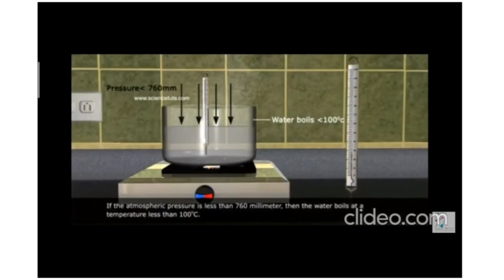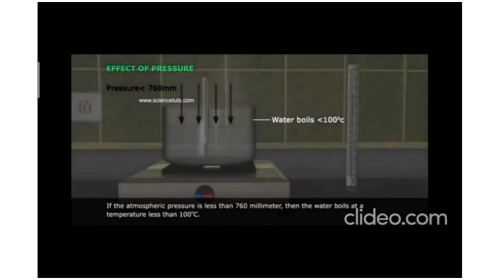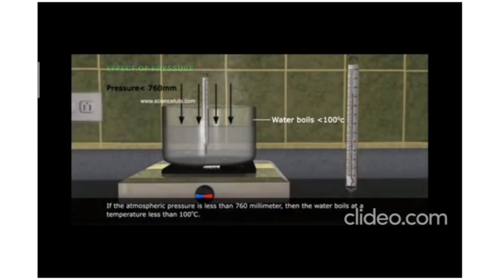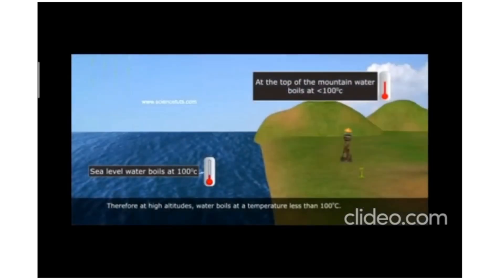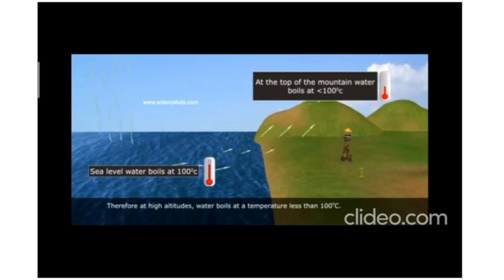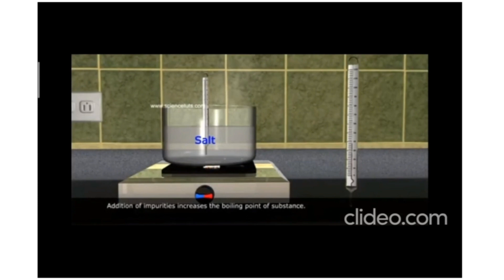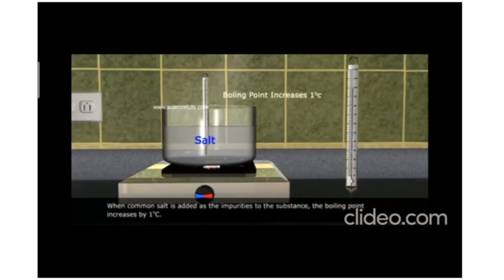In a pressure cooker, the food gets cooked faster because the pressure is high — the water is boiling at a higher temperature, so the food gets higher temperature. At higher altitudes, the pressure is low, so the boiling point also reduces. If you add salt to water, then the boiling point will increase and the freezing point will be lower.